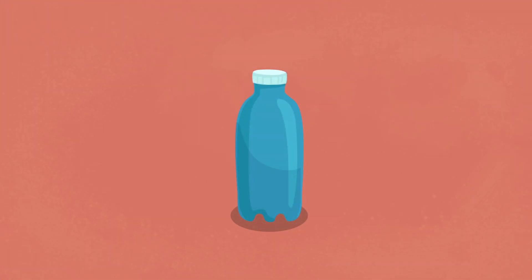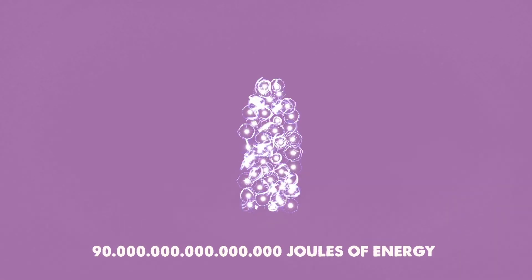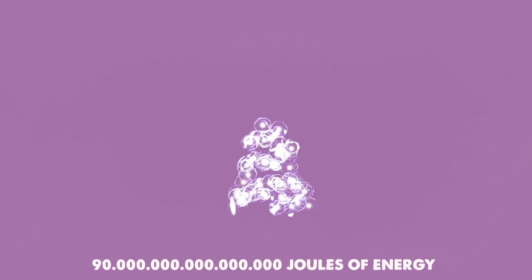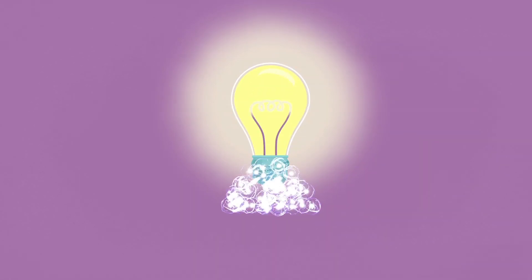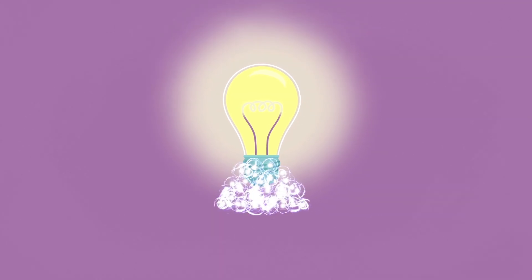Say you've managed to fully convert the mass of a liter of water into energy. You will get 90 quadrillion joules of energy. Just enough to power a 100-watt light bulb for more than 28 million years. The reason there's so much energy stored in a tiny bit of matter is that,